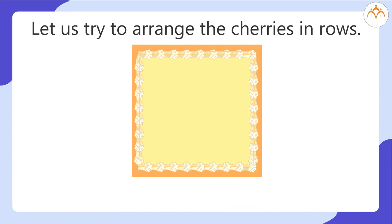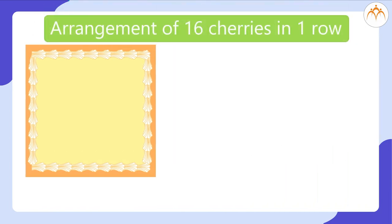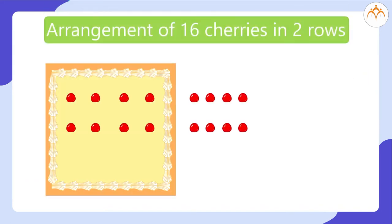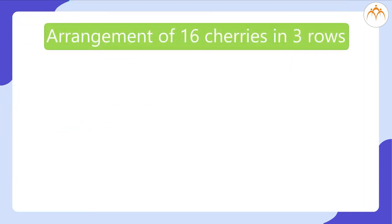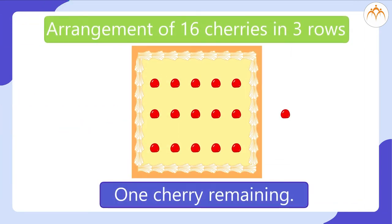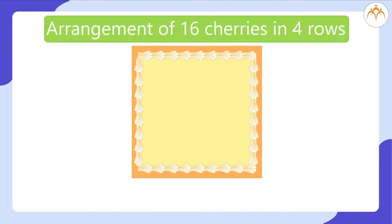Let us try to arrange the cherries in rows. 16 cherries in a single row or 16 cherries in 2 rows will not fit on the cake. Arrangement of 16 cherries in 3 rows leaves 1 cherry remaining. Arrangement of 16 cherries in 4 rows looks like this.